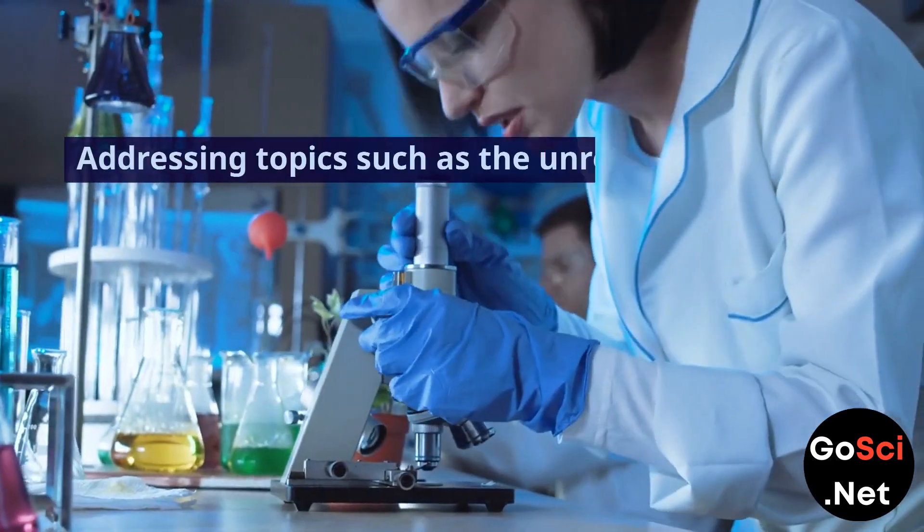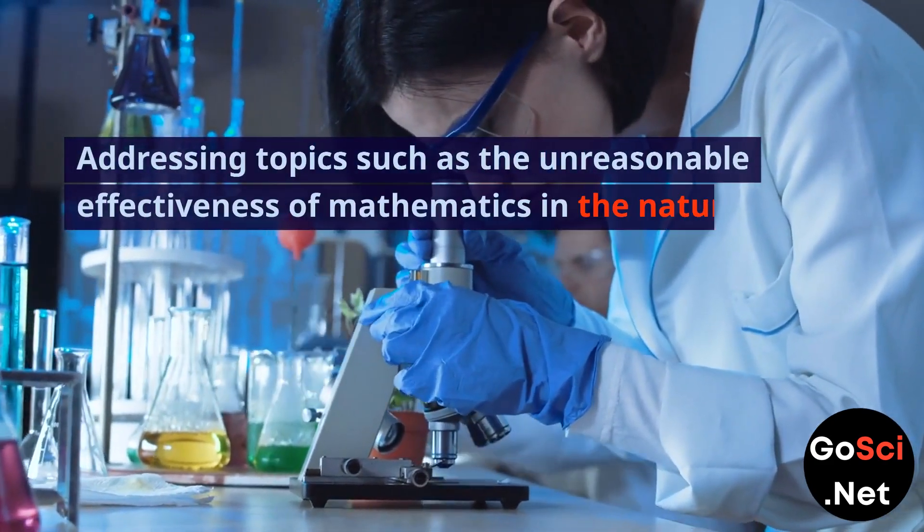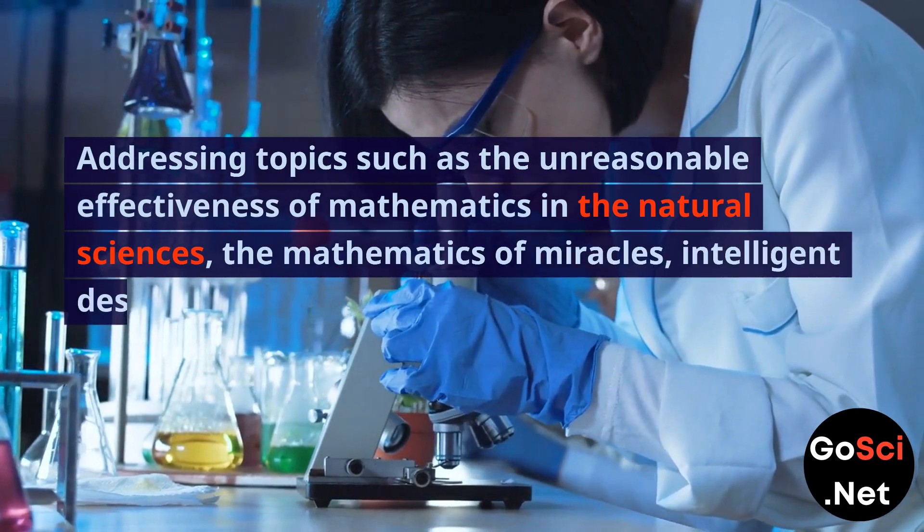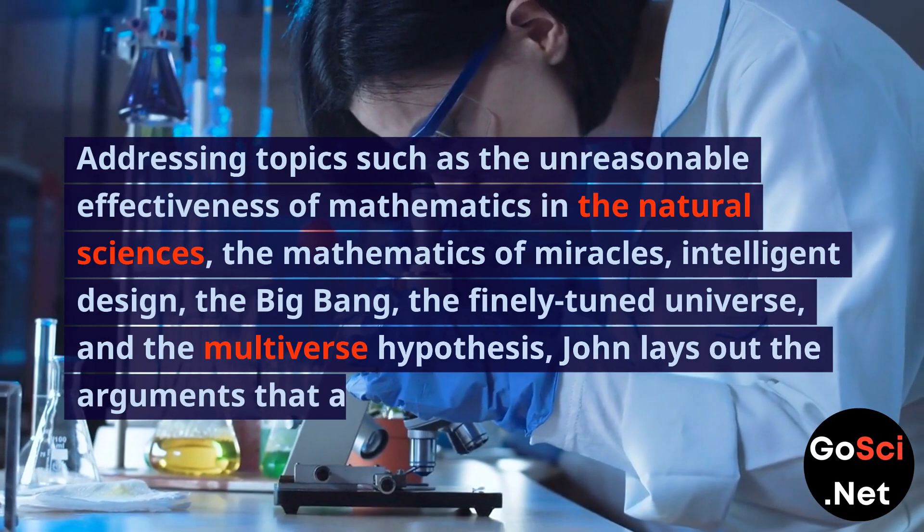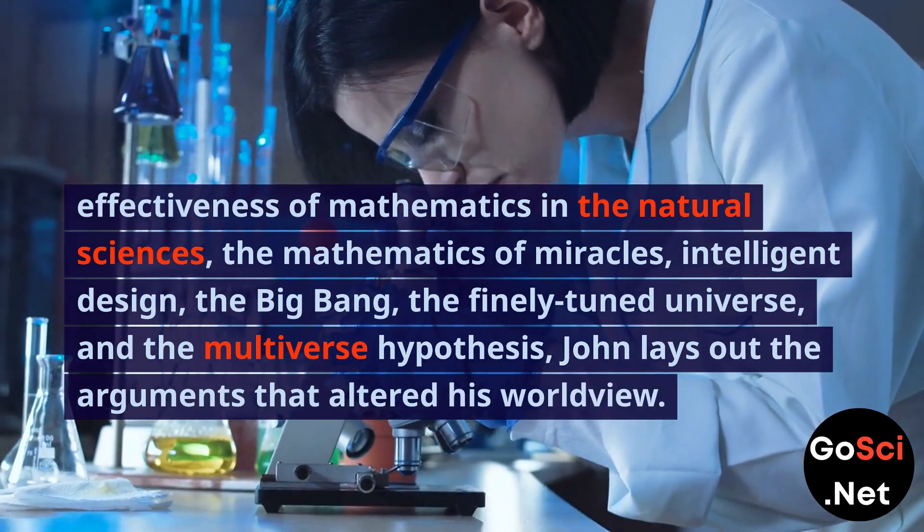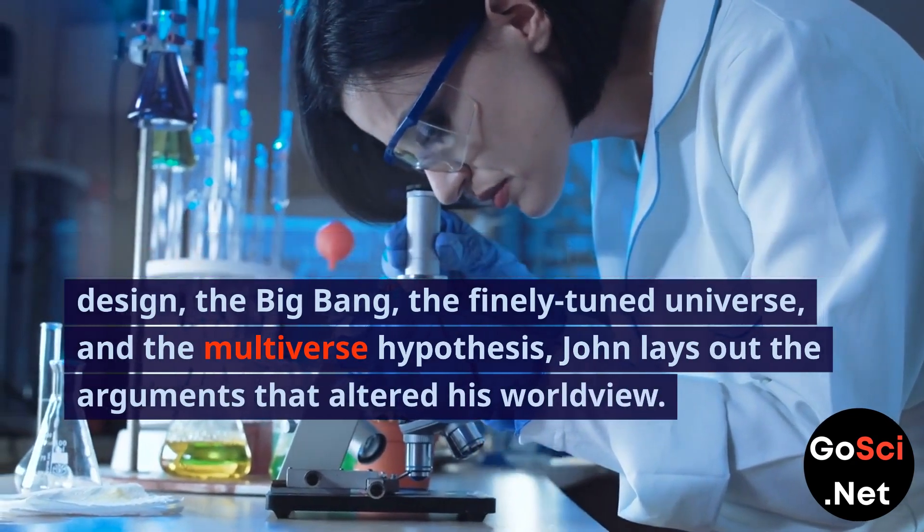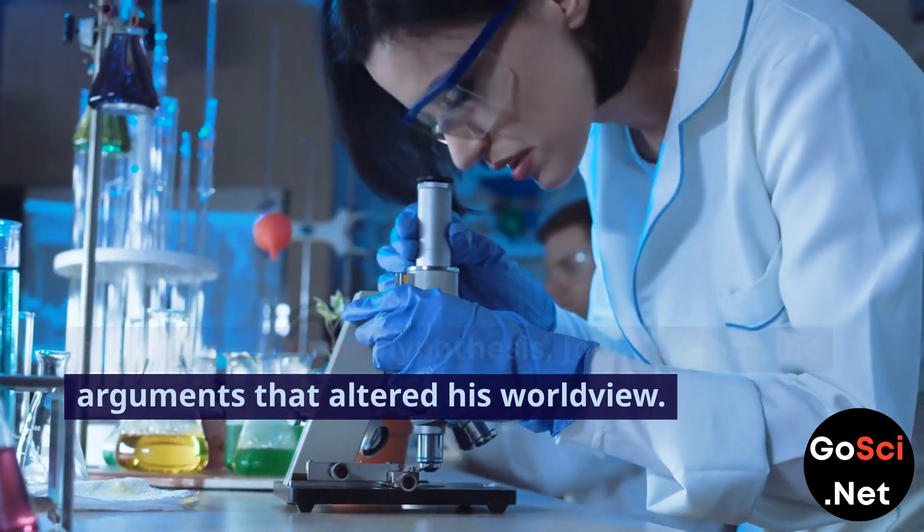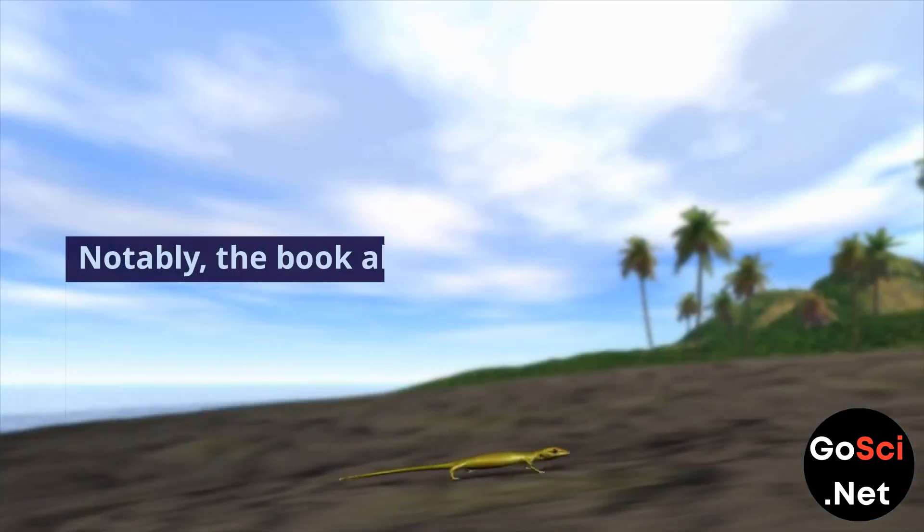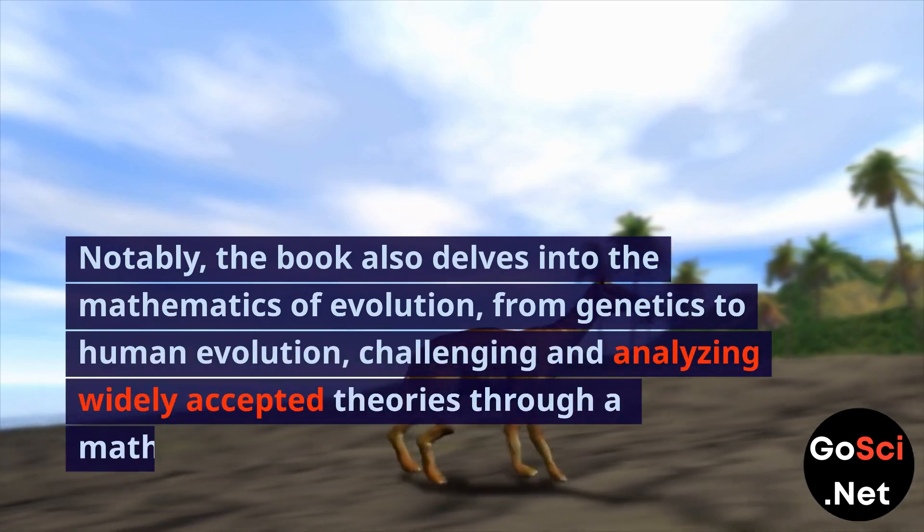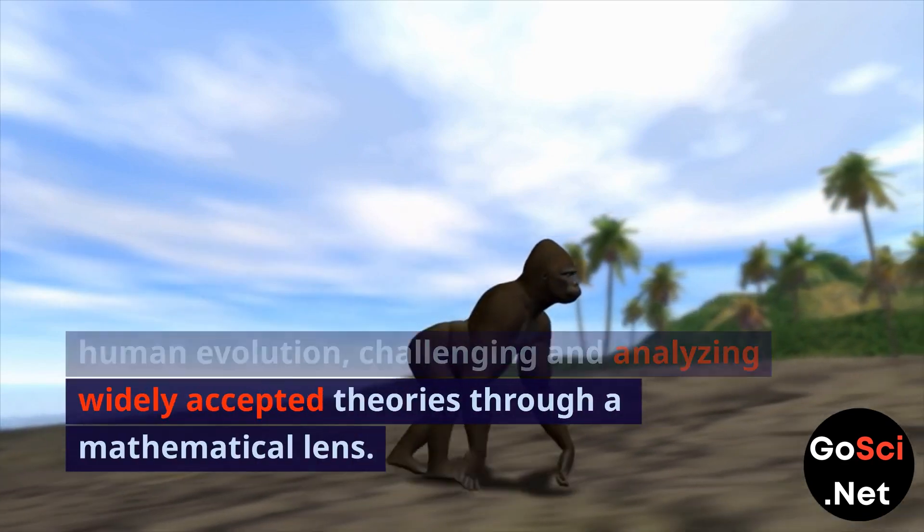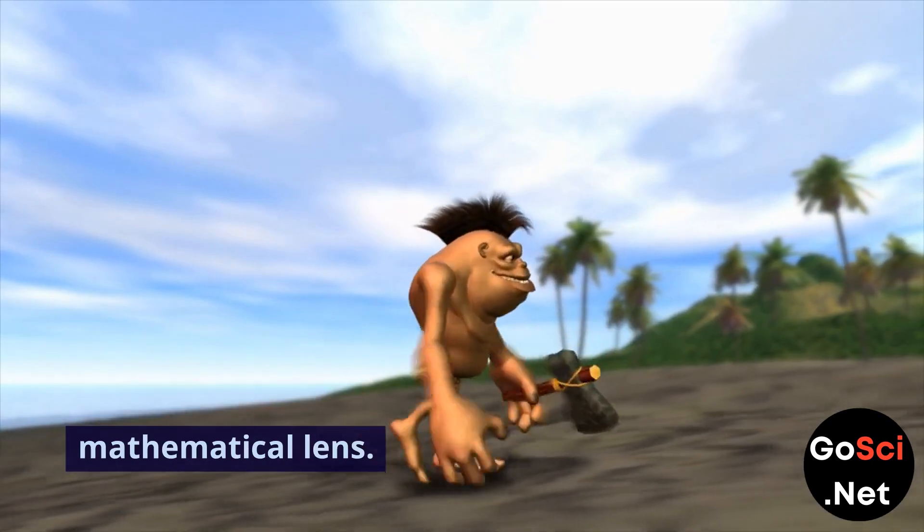Addressing topics such as the unreasonable effectiveness of mathematics in the natural sciences, the mathematics of miracles, intelligent design, the Big Bang, the finely tuned universe, and the multiverse hypothesis, John lays out the arguments that altered his worldview. Notably, the book also delves into the mathematics of evolution, from genetics to human evolution, challenging and analyzing widely accepted theories through a mathematical lens.